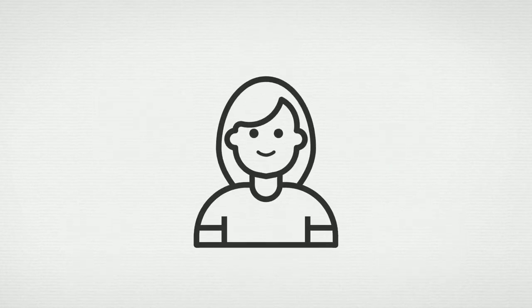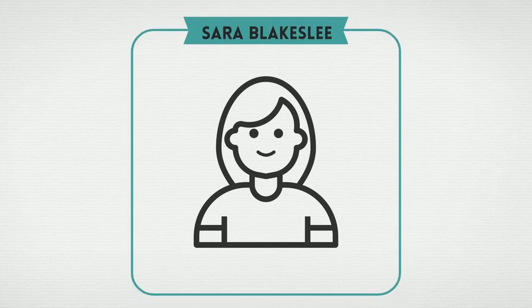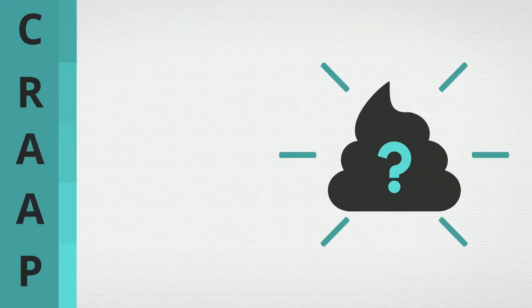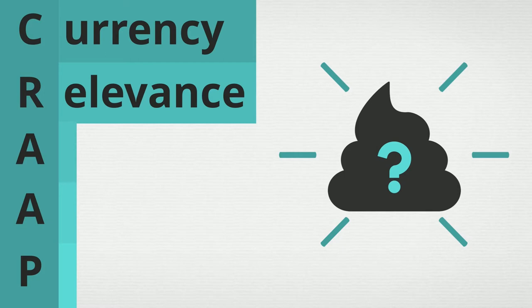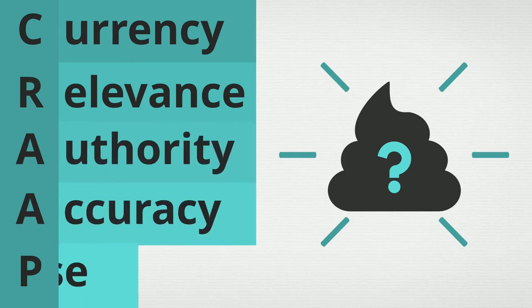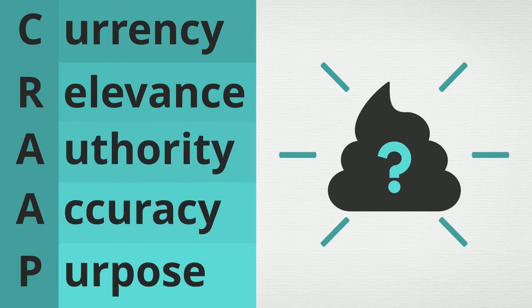As it turns out, a librarian from the University of California named Sarah Blakeslee came up with a funny way to help with this problem. She called it the CRAAP test — that's Currency, Relevance, Authority, Accuracy, and Purpose. In this video, we'll show you how to use the CRAAP test to evaluate the sources you find in your search to ensure that they are quality, relevant, and credible resources.